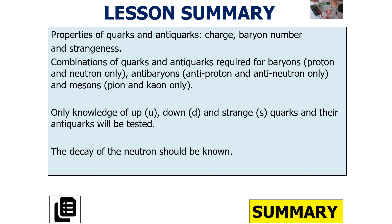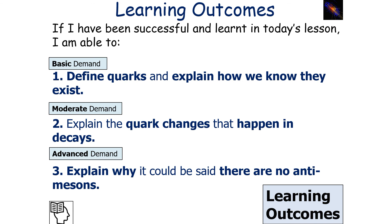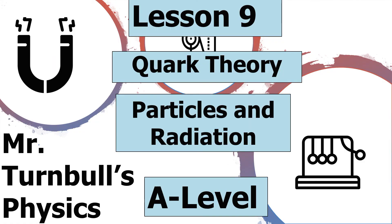Let's summarise what we've learned in today's lesson. We should know the properties of quarks and anti-quarks in terms of charge, baryon number and strangeness. We should know that combinations of quarks and anti-quarks are required for baryons — protons and neutrons only — antibaryons — anti-proton and anti-neutron only — and mesons — pions and kaons only. We should have knowledge of the up, down and strange quarks and their anti-quarks, and understand what happens when a neutron decays. I hope you've enjoyed today's lesson on quark theory, part of the particles and radiation topic in AQA A-level physics. Thank you very much for listening, and have a lovely day.